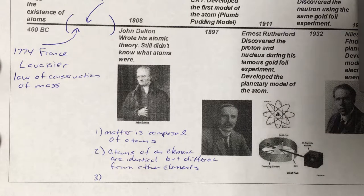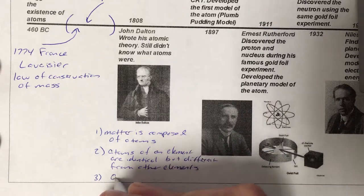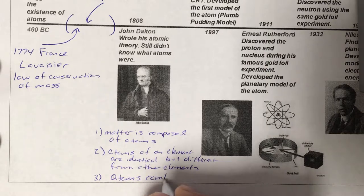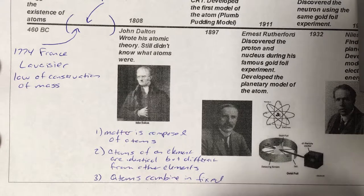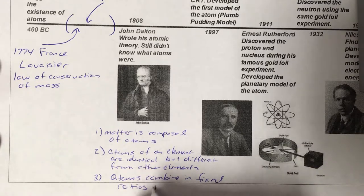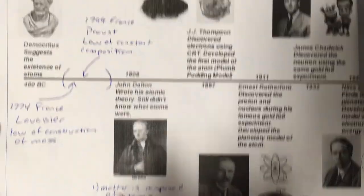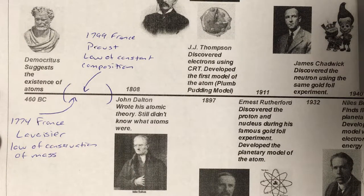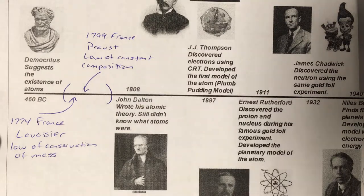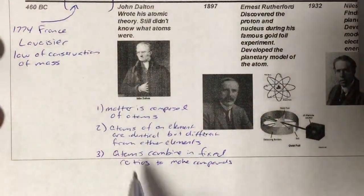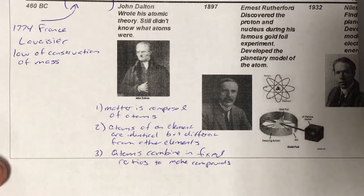Third, atoms combine in fixed ratios to produce compounds. This is what Proust was doing — the constant composition idea. The elements are always combined together in the same ratio. You always have the same ratio by mass of carbon to oxygen in carbon dioxide. What Dalton was saying is that's because you have the same atoms combining in the same ratio each time.